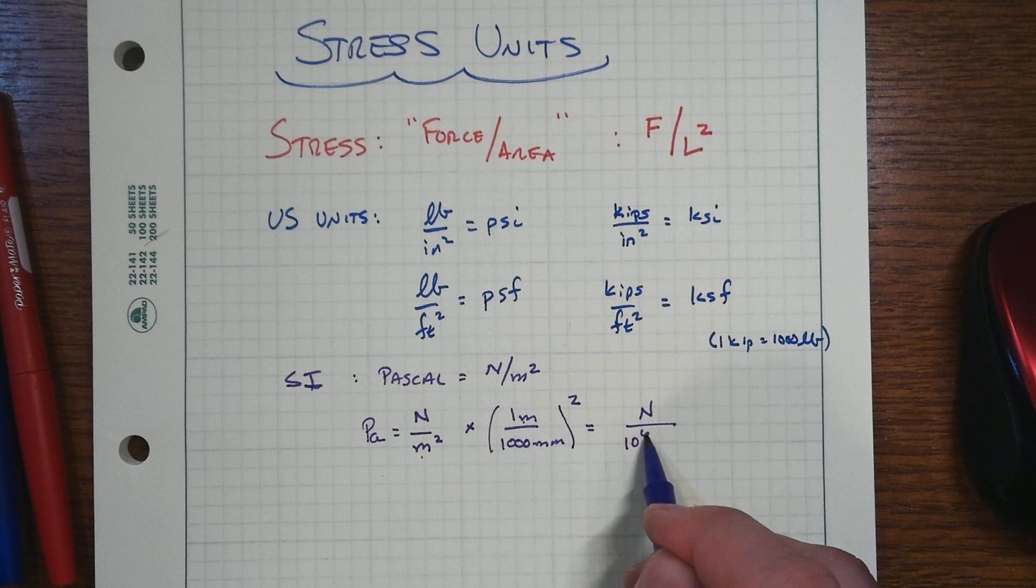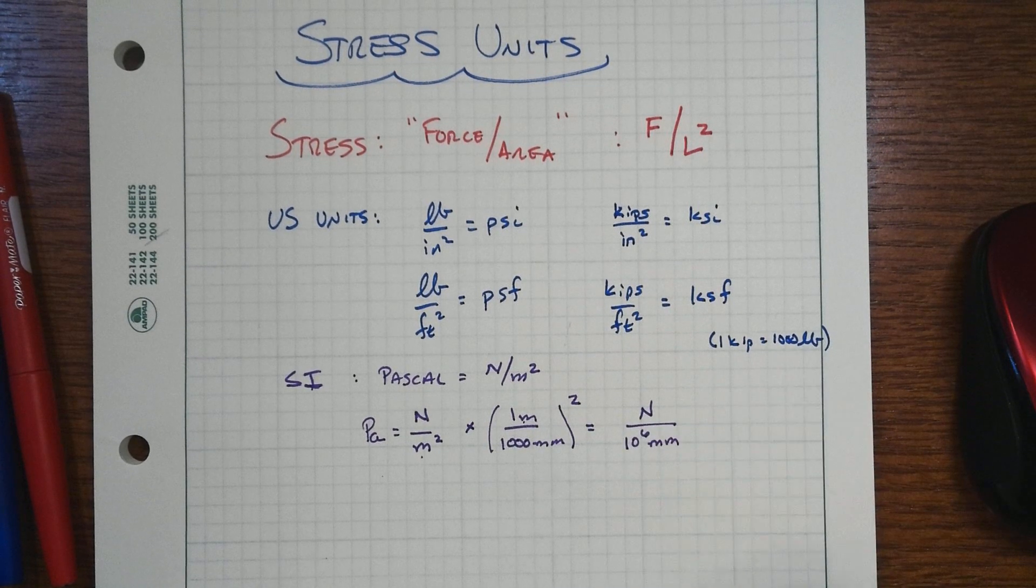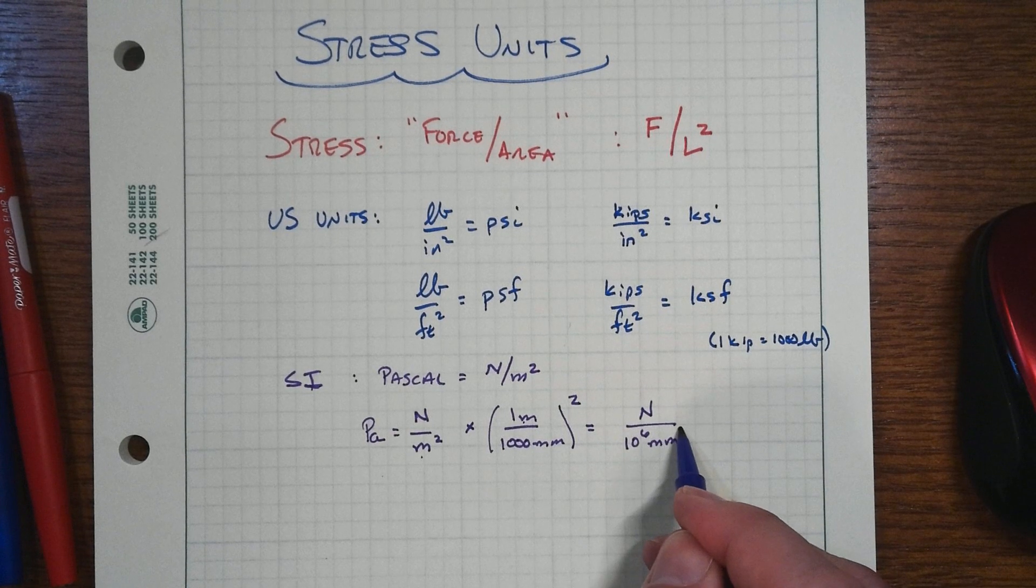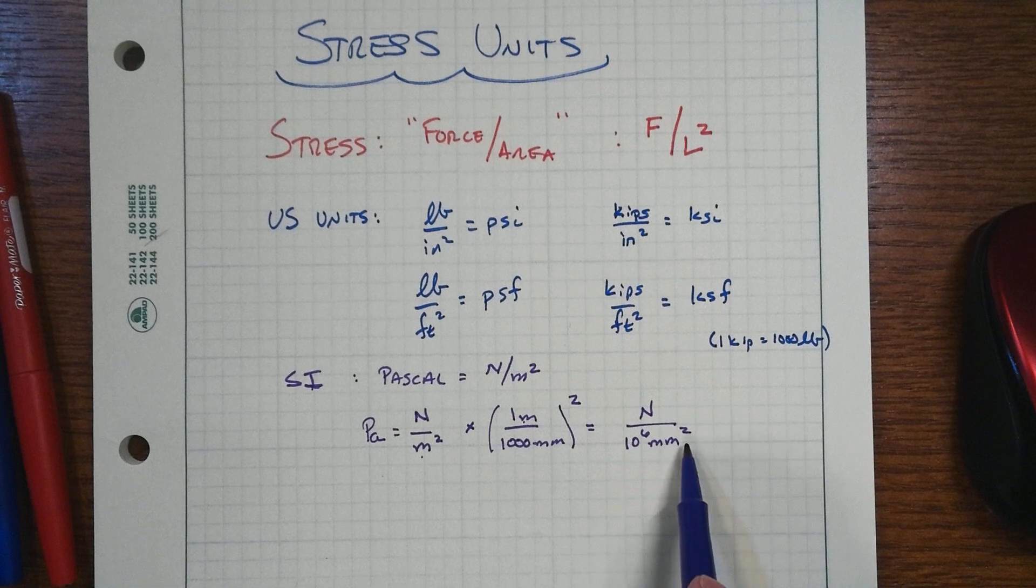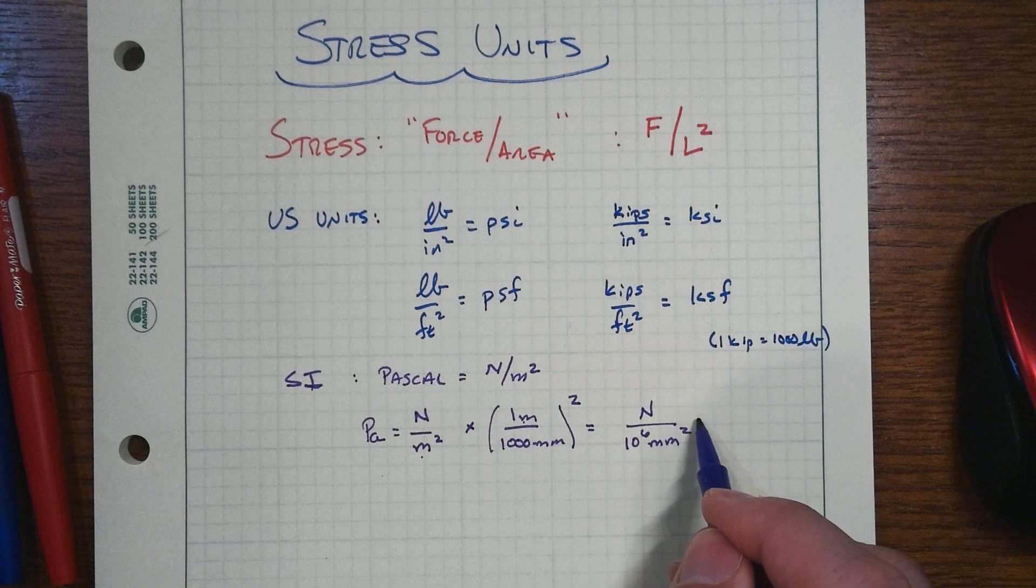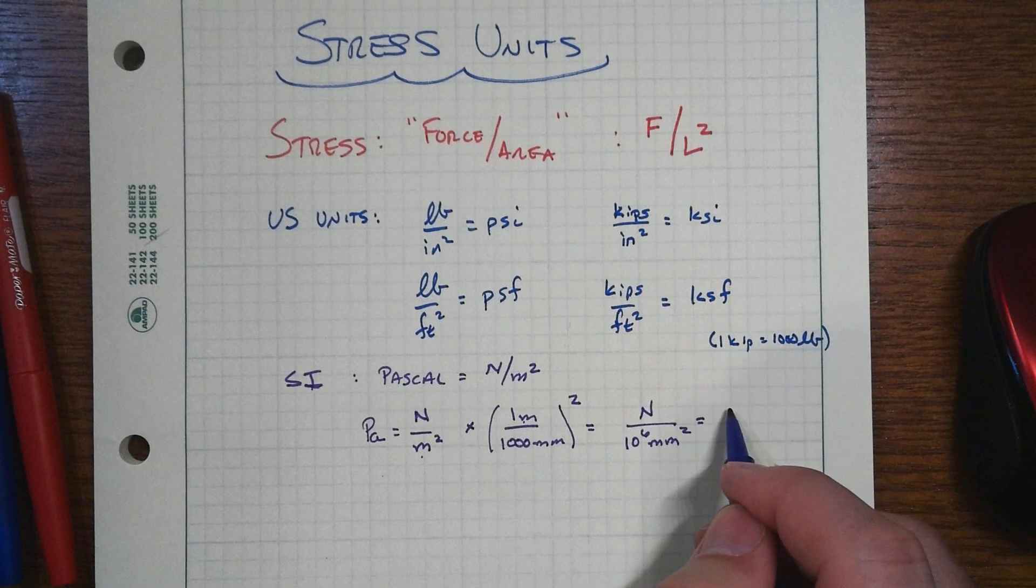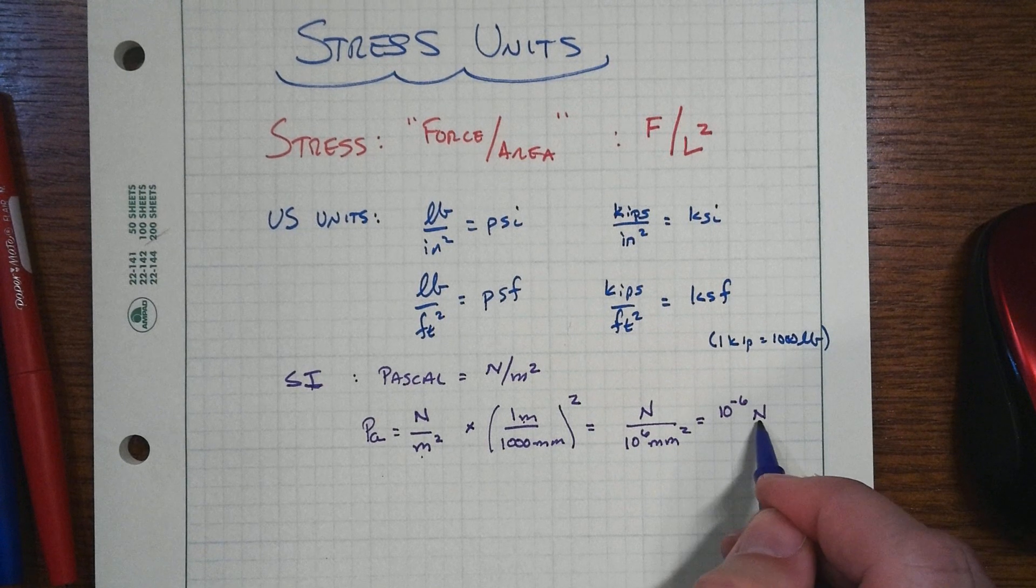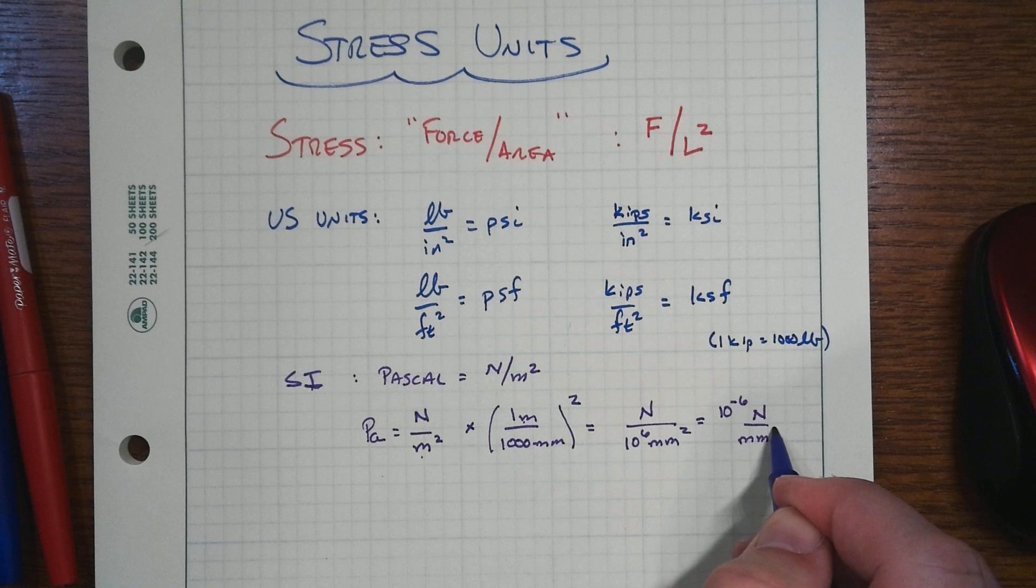That's where people usually make the mistake here. And then they won't, they'll forget to square the millimeters too. But you'll have newton over millimeter squared. And that is the same thing, then, as 10 to the minus sixth newtons over square millimeter, right?